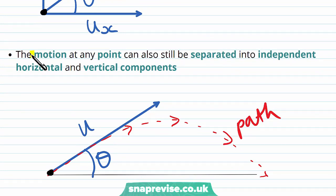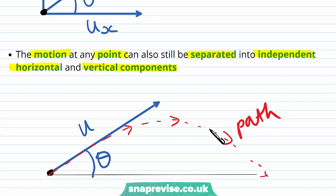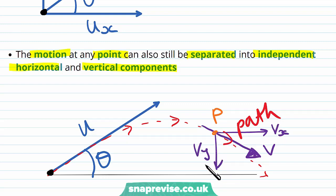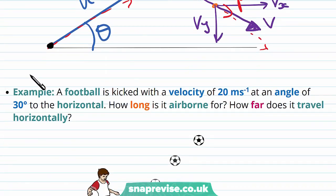The motion at any point can also be separated into independent horizontal and vertical components. At a point P on the path, we have the actual velocity v of the projectile, and we can resolve this into a horizontal component vx and a vertical component vy.